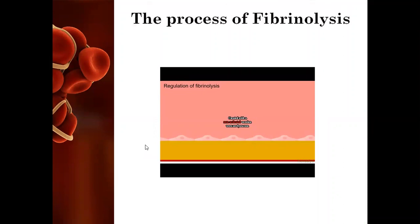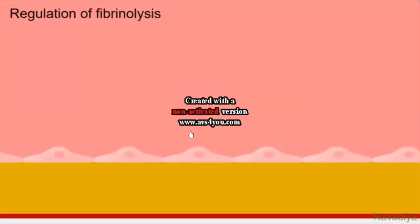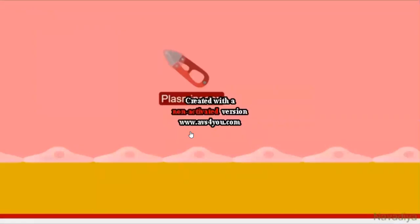Now we will see how the regulation of fibrinolysis takes place — what are the aspects of fibrinolysis regulation in our body. This was the clot retraction, and how the clot is actually removed by the primary defense of our body. This next clip is again obtained from Non-Stop Neuron — we are thankful to them for this wonderful creation.